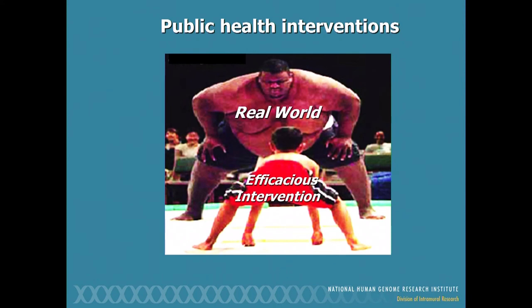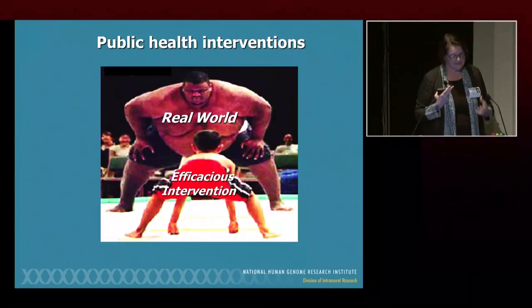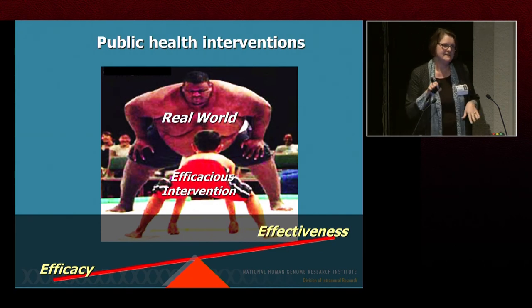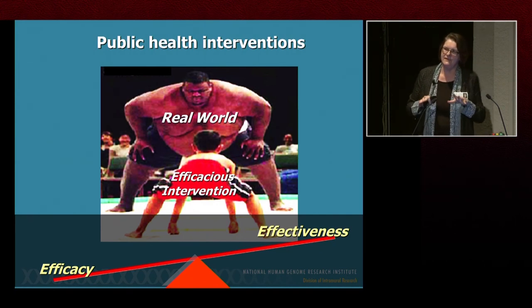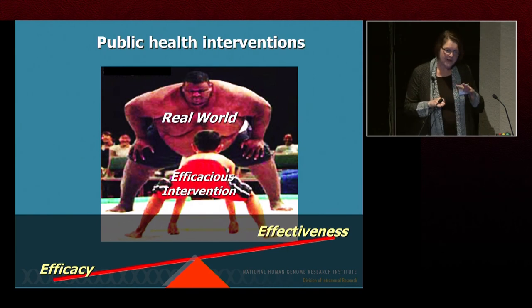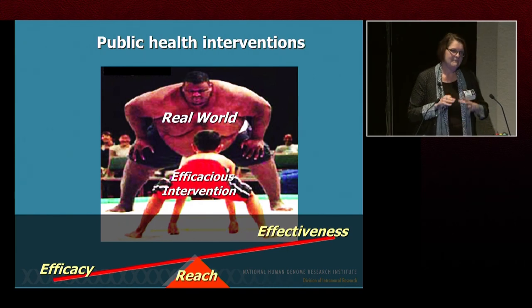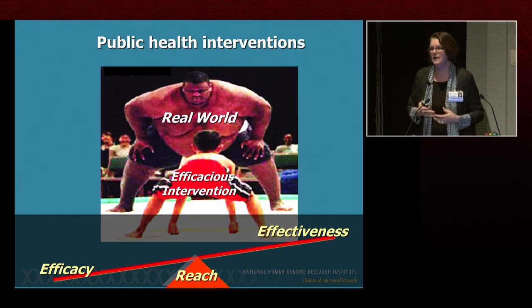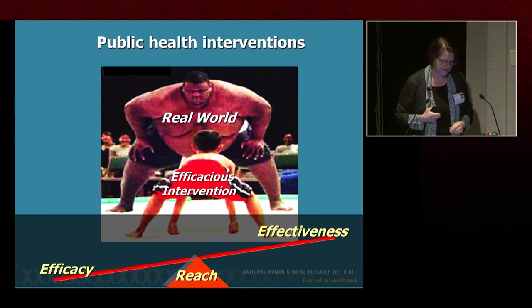When we take an efficacious intervention that we've tested under the most highly controlled circumstances and put it out in the real world, it's up against some pretty big challenges. We're always in the question of balancing efficacy against effectiveness. What we want to do is find the sweet spot where we're maximizing reach — the more people we can give even a mildly effective intervention to, the greater the likelihood of a public health impact.